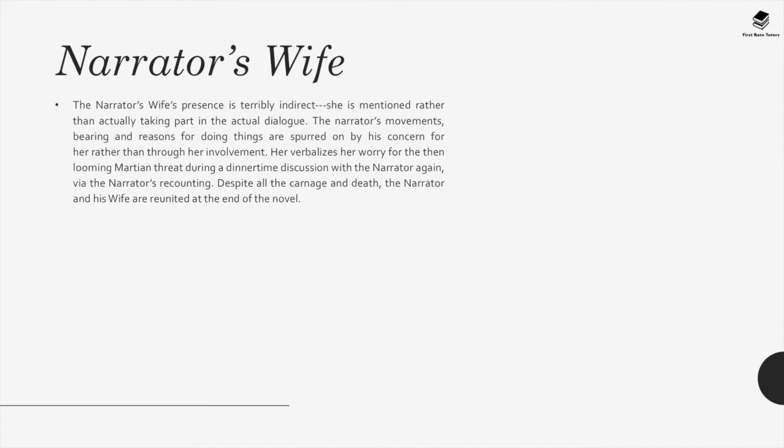The narrator's wife: The narrator's wife's presence is terribly indirect — she is mentioned rather than actually taking part in the dialogue. The narrator's movements, bearing and reasons for doing things are spurred on by his concern for her rather than through her direct involvement. He verbalizes her worry for the looming Martian threat during a dinner-time discussion. Despite all the carnage and deaths, the narrator and his wife are reunited at the end of the novel.